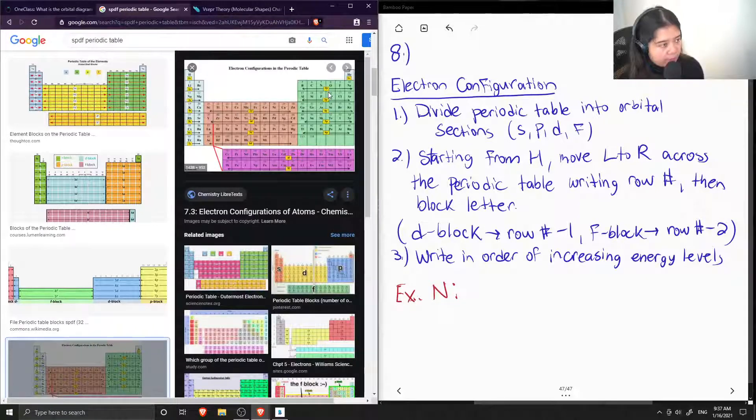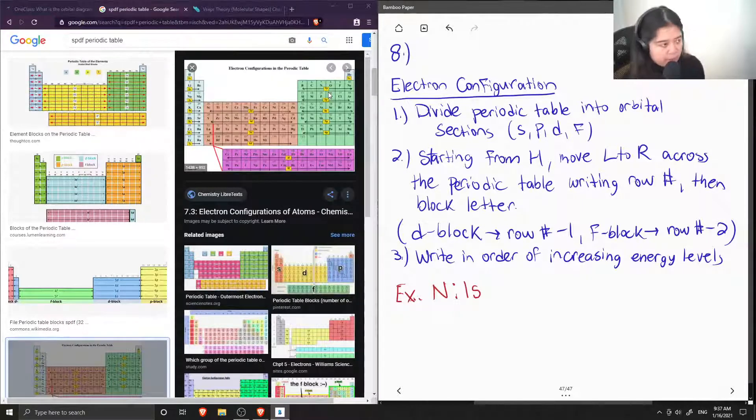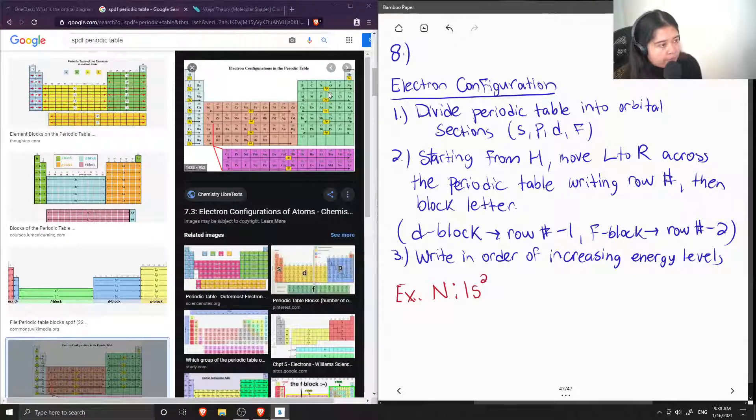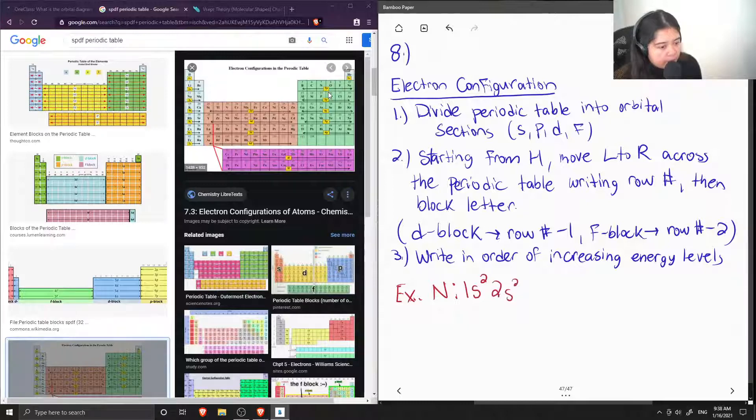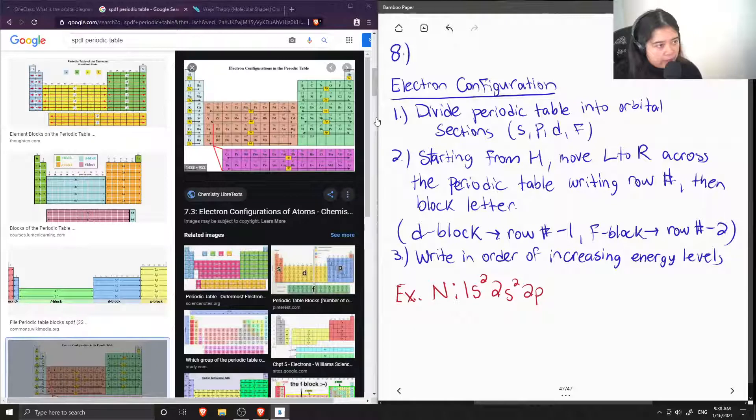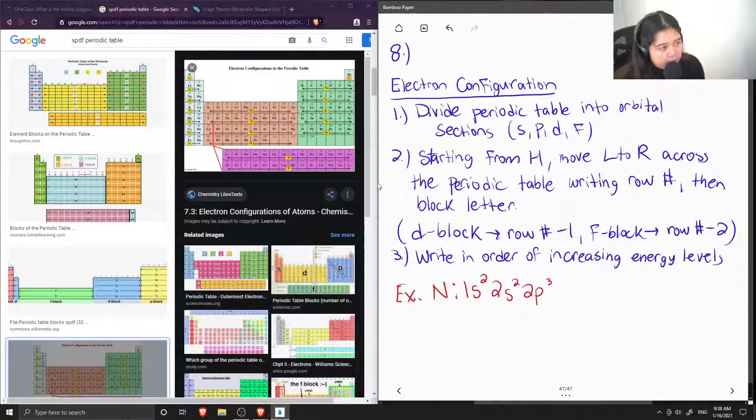And we start from hydrogen. And we first write the row number, which is 1, and then the block letter, which is S. And then the superscripts tell us how many electrons are in that orbital. So in the 1s orbital, there are 2 electrons, so we write 1s2. And then moving down to the next row, we have 2s2. And then moving over, we have 2p. And then count out how many electrons up to the nitrogen: 1, 2, 3. So our final electron configuration is 1s2 2s2 2p3.